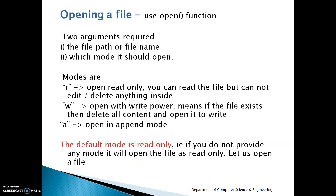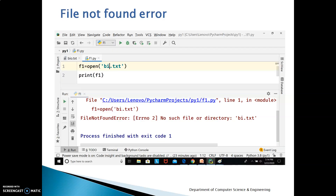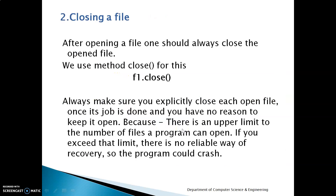Let us open a file in read mode. We get a FileNotFoundError when you specify a file name that does not exist. For example, my file is bio.txt, but when I give by.txt there is no such file existing, so it gives a FileNotFoundError. Whenever you open a file, you should make sure that the file name is correct and the file exists.